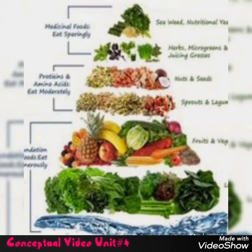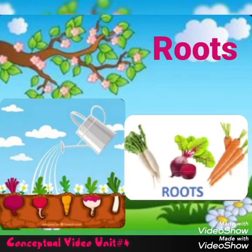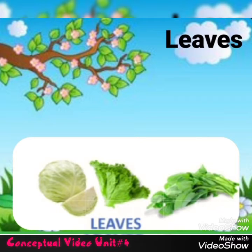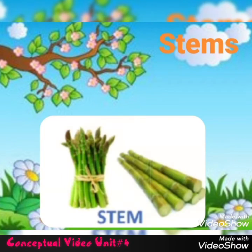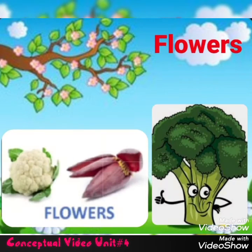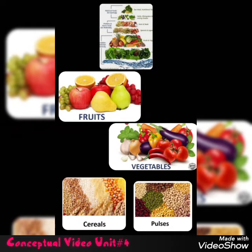Plants provide us food. We eat different parts of plants. From roots we eat radish, beetroot, carrots, and turnips. From leaves we get cabbage, lettuce, and spinach. We get asparagus and sugarcane from the stem, and cauliflower, banana flowers, and broccoli from flowers. We get fruits and vegetables from plants. Plants even give us cereals and pulses.